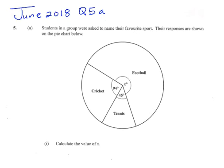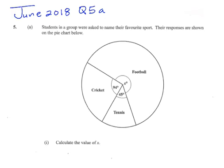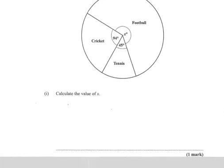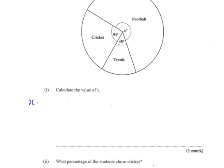Calculate the value of x. To find x we're going to use the fact that angles in a circle add up to 360 degrees. So therefore x would be equal to 360 degrees minus 94 degrees plus 45 degrees.